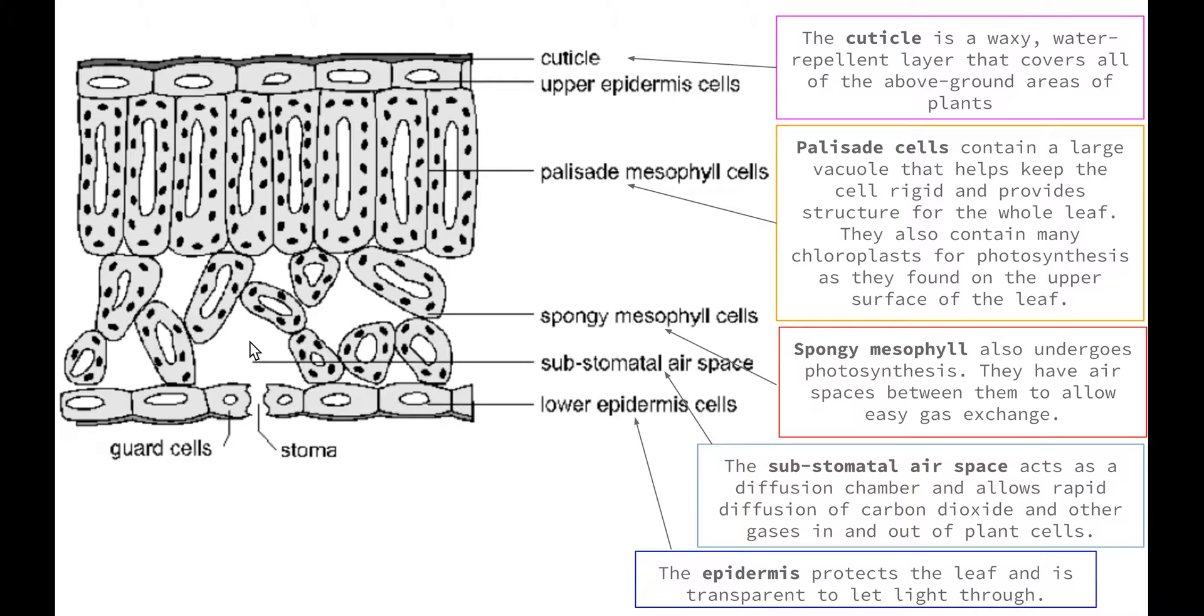We also have the epidermis. The epidermis protects the leaf and is transparent to let light through. That's found on both the upper and the lower surface of the leaf.